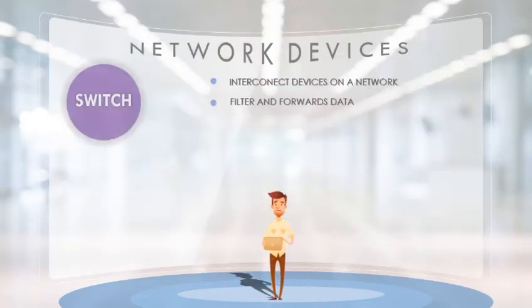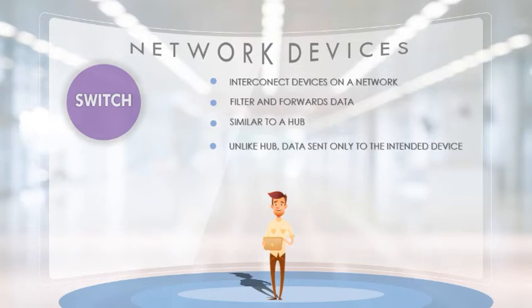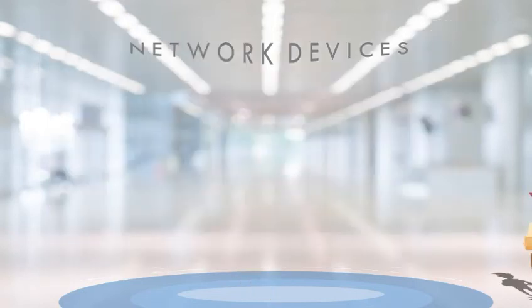Next we are going to see a switch, or switching hub. A switch is an intelligent hub that connects several nodes to form a network and redirects the received information only to the intended node. Unlike a hub which sends data to all connected nodes, a switch sends data only to the intended device. It works as a filter-and-forward device. It looks like a hub and connects multiple computers, but the difference is that it retransmits received information only to the intended node.